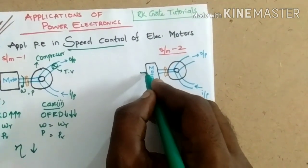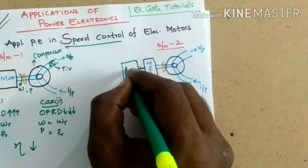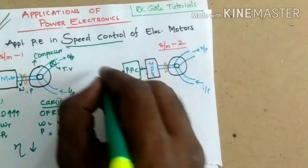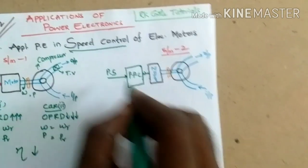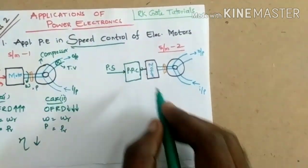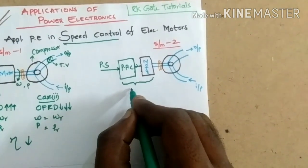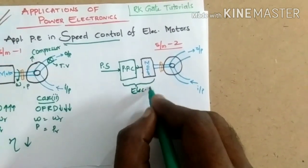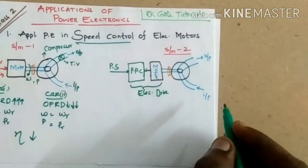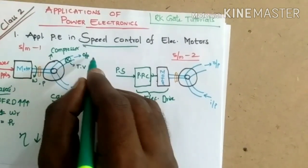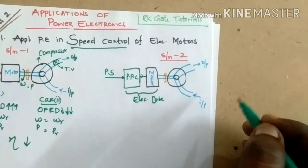Now if you come to the second case, this motor is fed from a circuit called a power processing circuit, which is from the power supply. The combination of this power processing circuit and the electrical motor is called an electrical drive. Here we used a throttling valve to control the output, but with the electrical drive you do not need to use any throttling valve for controlling the compressor output.